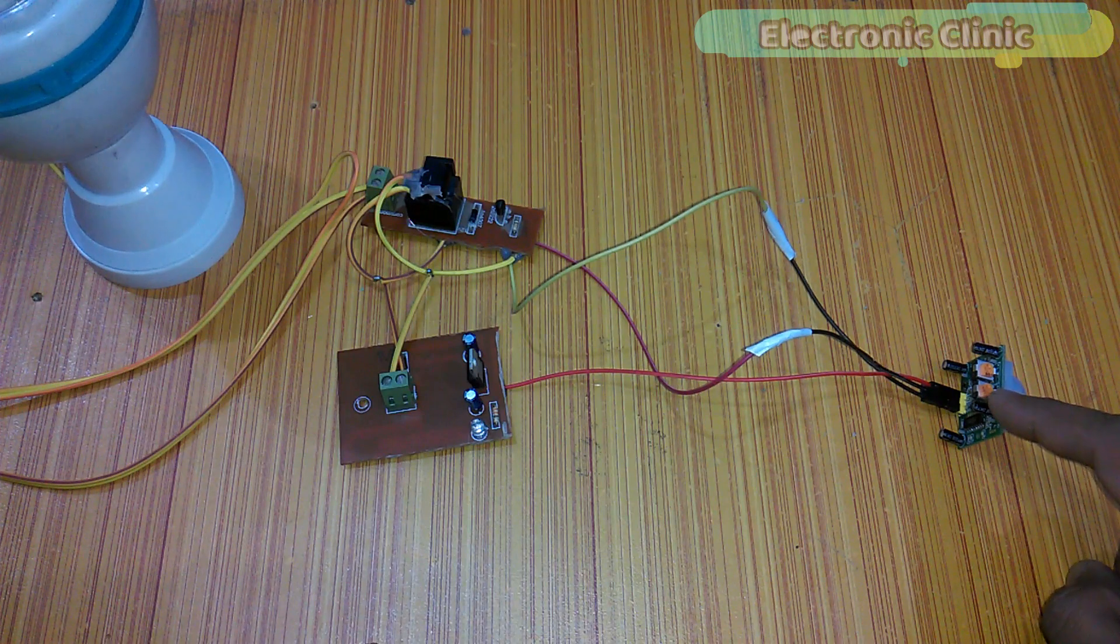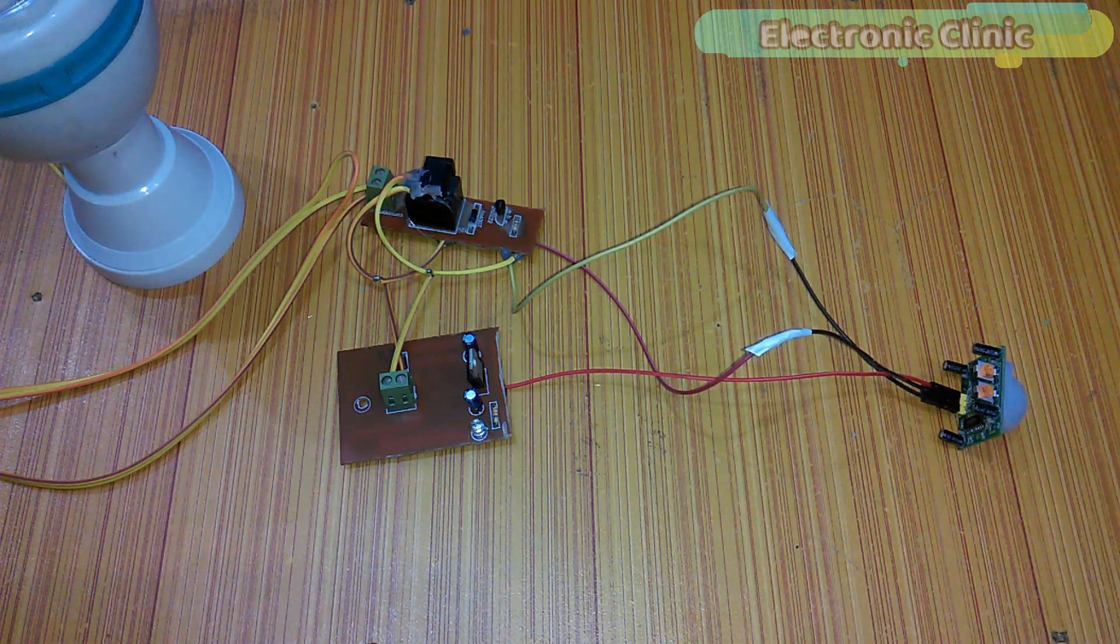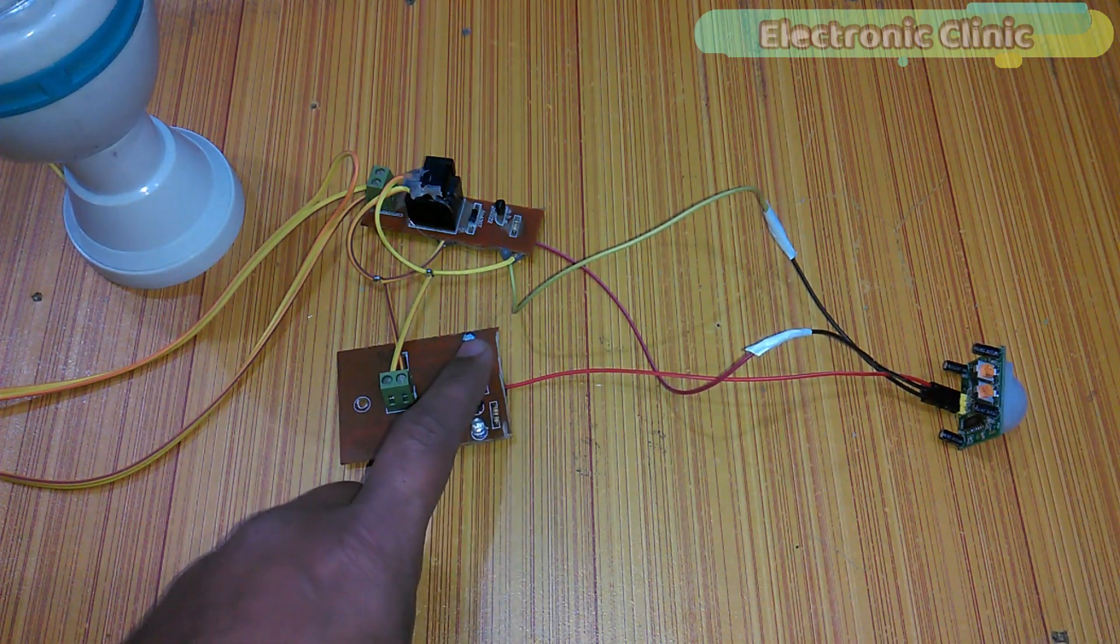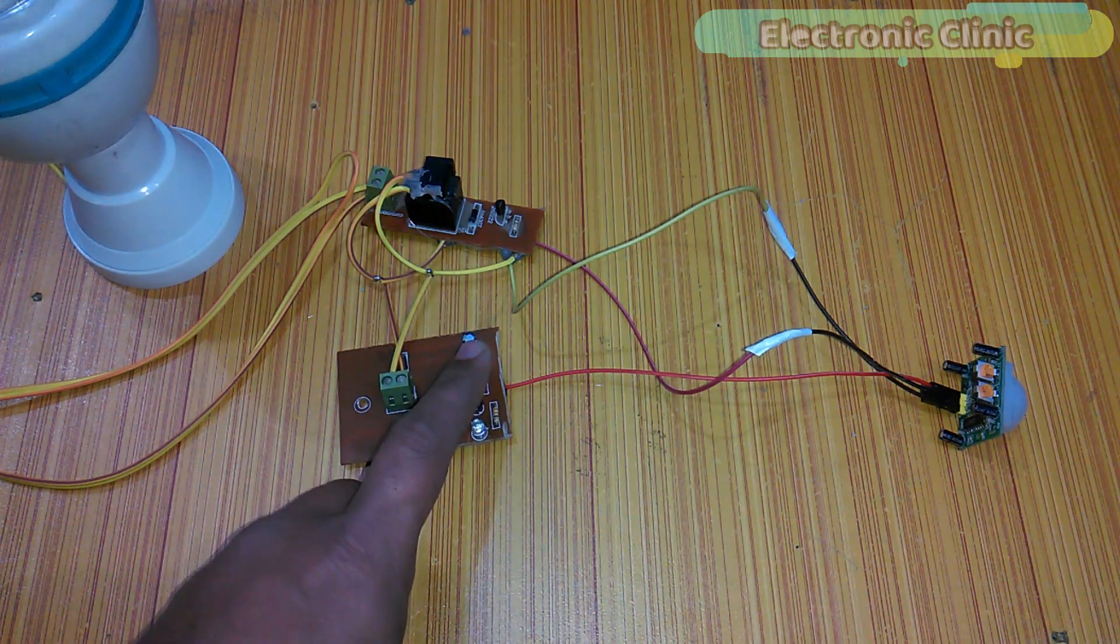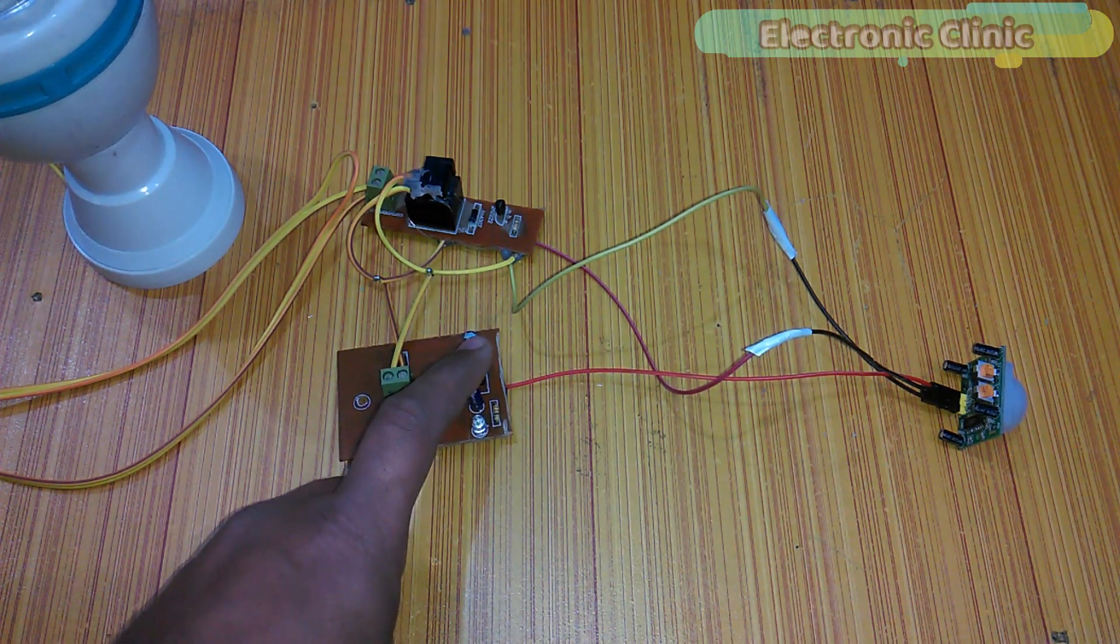The VCC of the PIR sensor is connected with the output of the 7805 voltage regulator. So 5 volts will be used to power up the PIR sensor.